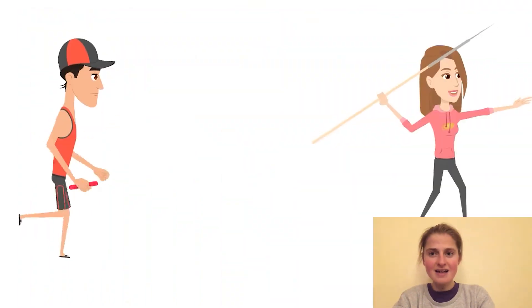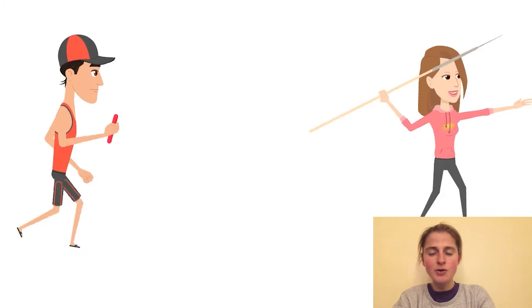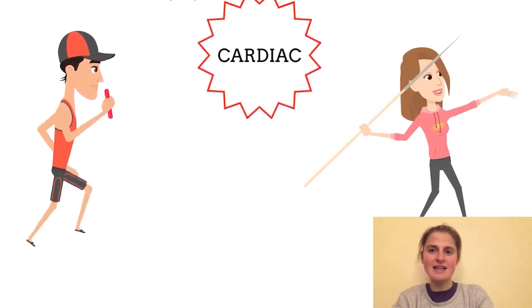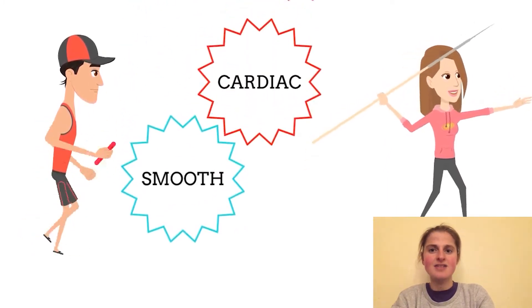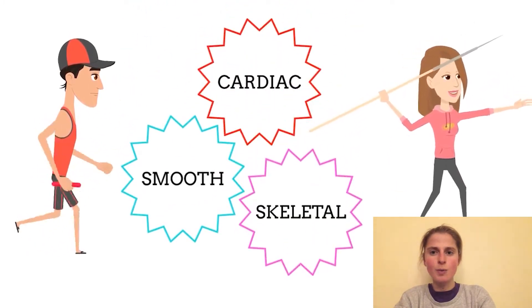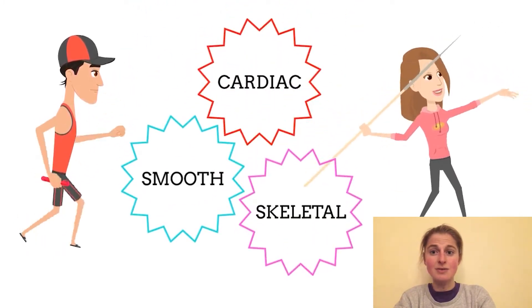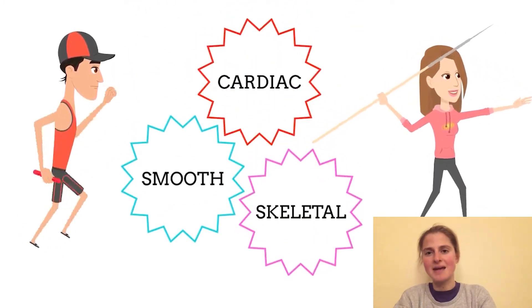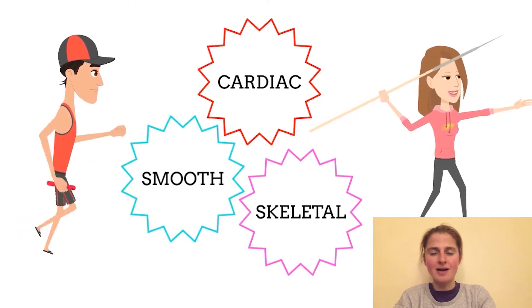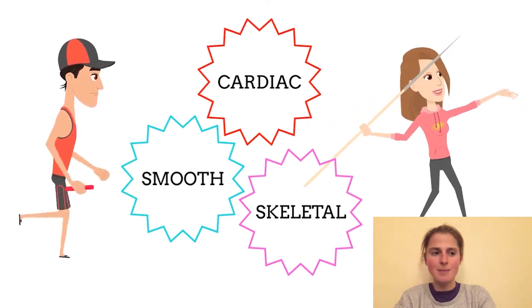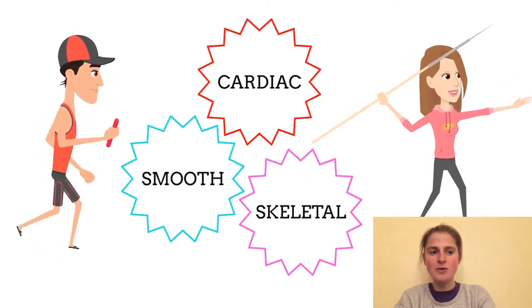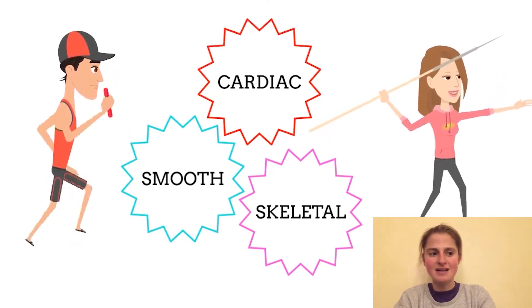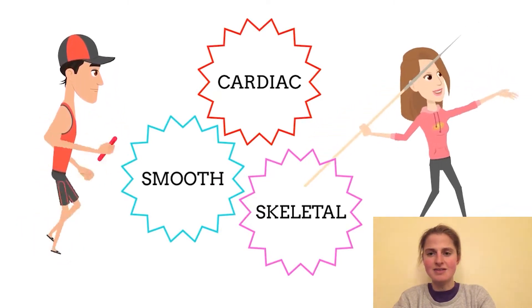There are three types of muscle fibre in the body: cardiac, smooth, and skeletal. Skeletal is what we're most concerned with, as this is what makes us move, and our body is made up of over 40% of skeletal muscle.